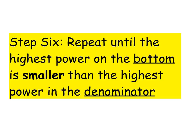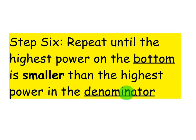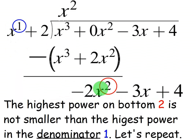Now we're going to repeat what we just did. Repeat until the highest power on the bottom is smaller than the highest power in the denominator. Here the highest power in the bottom is 2, which is not smaller than 1 in the denominator, so we have to repeat. We're going to take the first term down here and divide by the first term of the denominator — negative 2x squared divided by x gives negative 2x — and put the answer to the right of what we have on top.